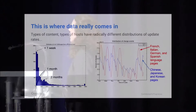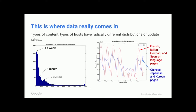This is where the data really comes in. Different types of content and different types of hosts have radically different distributions of update rates. On the left, you'll see a sample of 10,000 pages in a histogram of average rate of change. The largest buckets are pages that change less than every week. There's a long tail of pages with a fairly well-defined update rate, but it averages around 62 days — meaning someone probably visits it once a quarter. On the right is a distribution of change events from pages we painfully crawled every single hour for about two weeks.